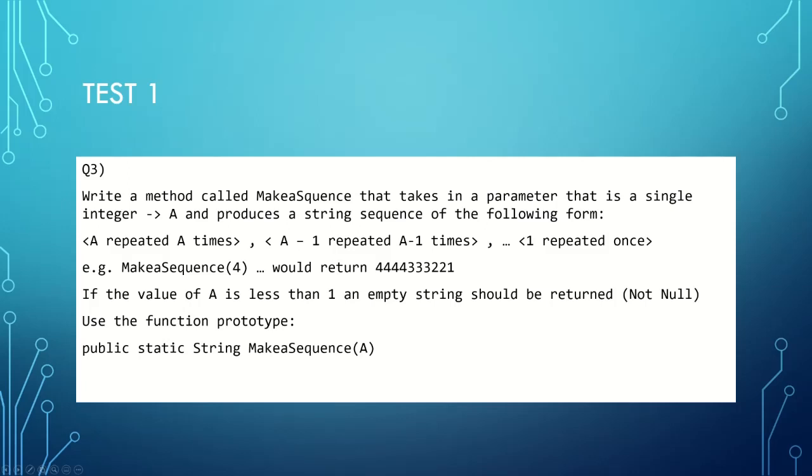An example is given where if we have makeASequence four, it would return four fours, three threes, two twos and one one. If our value of a is less than one, an empty string should be returned. It is specified within the examination paper that that is not the same as returning null. Use the following function prototype: public static String makeASequence int a. If you feel comfortable going ahead with that, do go ahead and I'll explain it after.